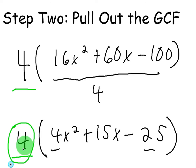Anyway, while you're writing that down, just remember if you pull the GCF out, you should be able to multiply it back to get the same thing. 4 times 4x squared is 16x squared. 4 times 15x is 60x. 4 times negative 25 is negative 100.